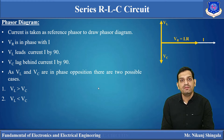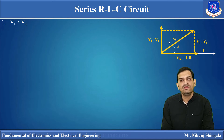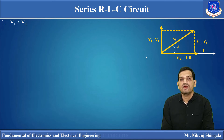Now when Vl is greater than Vc the phasor diagram will look different than when Vl is less than Vc. Let us take them one by one. For the case Vl greater than Vc: since Vl and Vc are in phase opposition, the resultant of Vl and Vc will be in the direction of Vl. The resultant phasor will be Vl minus Vc because both are in opposite directions, so this resultant points upward. Vr is in phase with I.